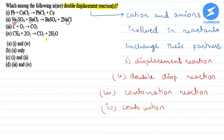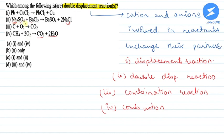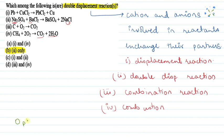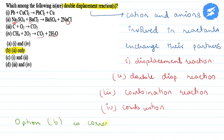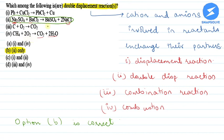So the only double displacement reaction out of the given reactions is number two, and the correct answer is option B — two only. Option B is correct, as only the second reaction is an example of a double displacement reaction. I hope you understood the question. Thank you.